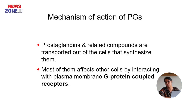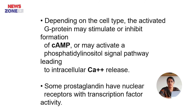Mechanism of action of prostaglandins: prostaglandins and related compounds are transported out of the cell that synthesizes them. Most of them affect other cells by interacting with plasma membrane G-protein coupled receptors. Depending on the cell type, the activated G-protein may stimulate or inhibit the formation of cyclic AMP, or may activate the phosphatidylinositol signaling pathway leading to intracellular calcium release. Some prostaglandins have nuclear receptors with transcription factor activity.